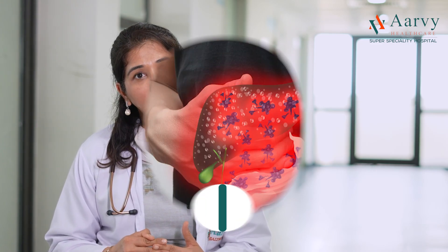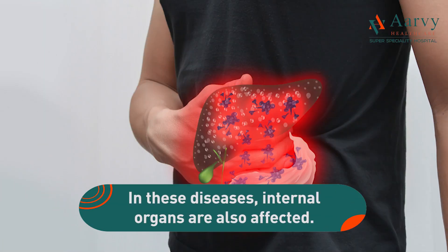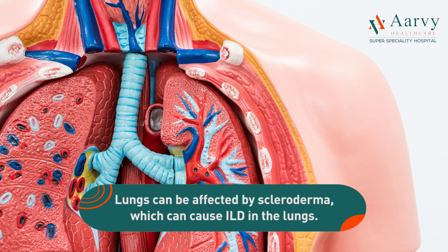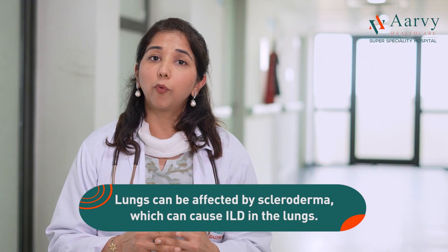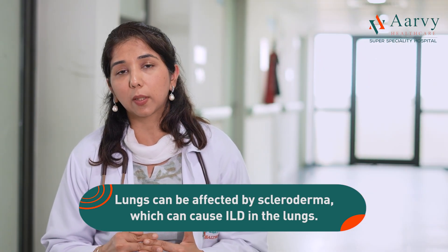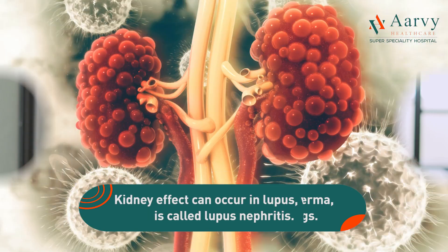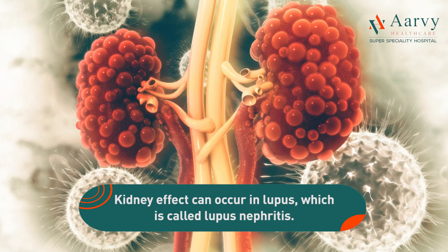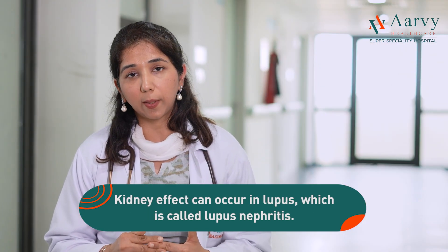These are all connective tissue diseases which we often see in OPD. In these diseases, the lungs can also be affected — like in scleroderma, the lungs can be affected by ILD. In lupus, there is kidney involvement, which we call lupus nephritis.